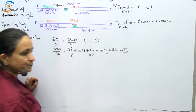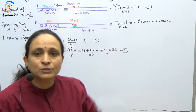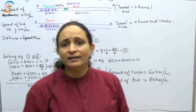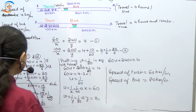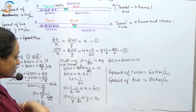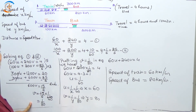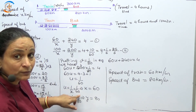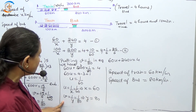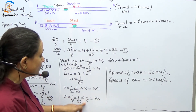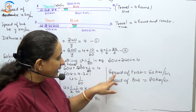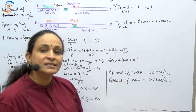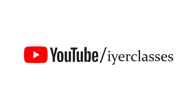After solving, u = 1/60 and v = 1/80. Since u = 1/x = 1/60, we get x = 60. Since v = 1/y = 1/80, we get y = 80. Therefore the speed of the train is 60 km/hr and the speed of the bus is 80 km/hr. Thanks for watching!